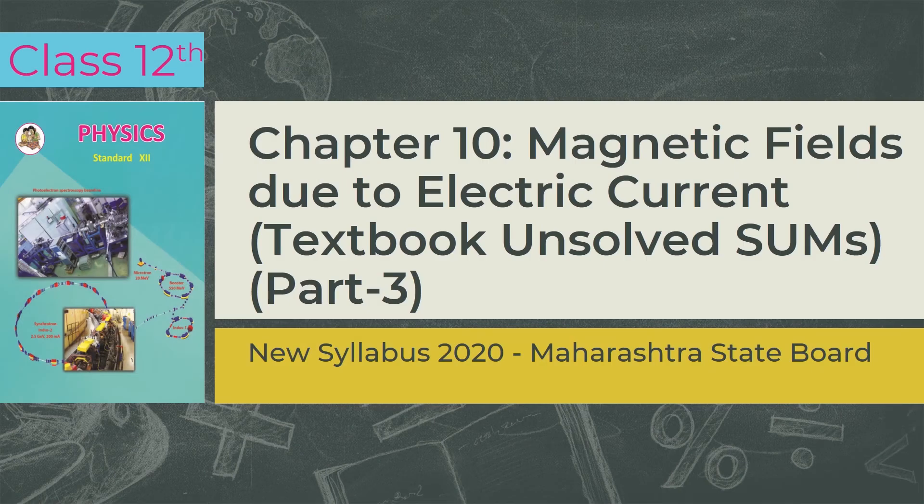Continuing with the lecture series of solving MCQs and sums of class 12 physics, today we will be covering the textbook unsolved sums of chapter 10, Magnetic Fields due to Electric Current. This is the third part of sum solving. We have already covered the MCQs and two parts of sum solving of this chapter. If you have not seen it yet, please check it out by clicking on the top right eye icon.